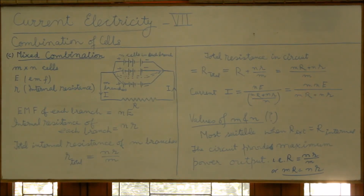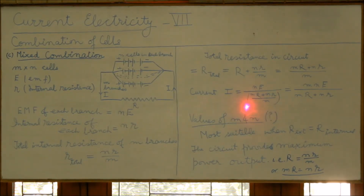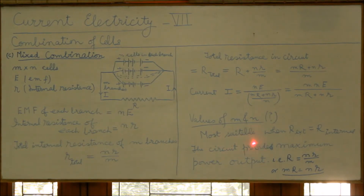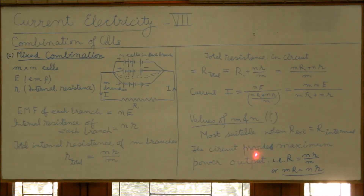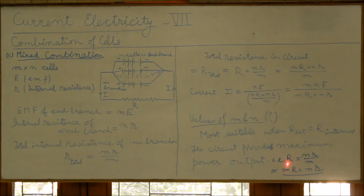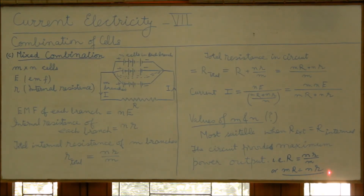Here mn is the total number of cells, which you may write as capital N. In order to get maximum current, the power drawn from the cells is maximum when R external equals R internal. This condition will be derived separately. The circuit provides maximum power output when capital R equals nr/m, or equivalently when mR equals nr.